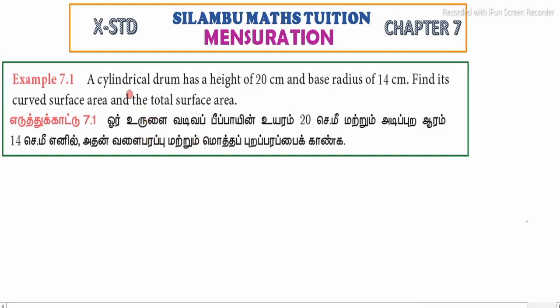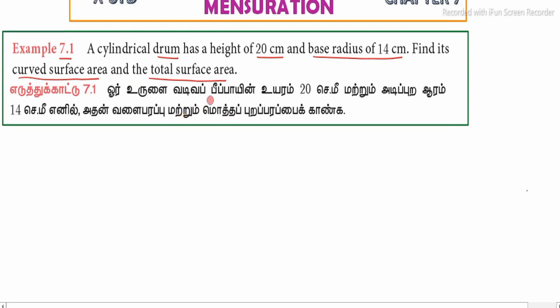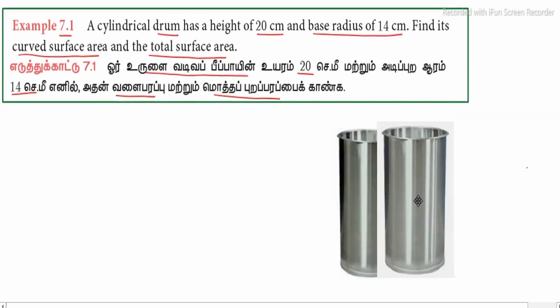Hi students, in this video Example 7.1: A cylindrical drum has a height of 20 centimeters and base radius of 14 centimeters. Find its curved surface area and the total surface area. This is the drum, this is the top and base. Let us denote this one here.